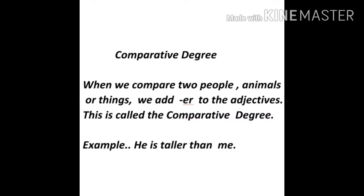Next, comparative degree. When we compare two people, animals, or things, we add '-er' to the adjective. This is called the comparative degree. For example: 'He is taller than me.' In this sentence, we compare two persons — 'he' and 'me' — and we add '-er' to 'tall' to get 'taller', which is the comparative form.